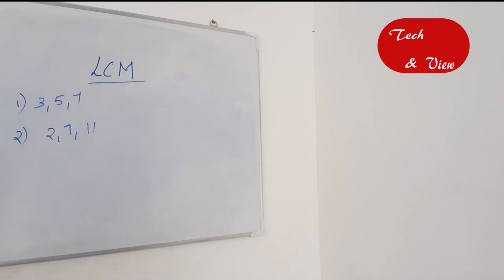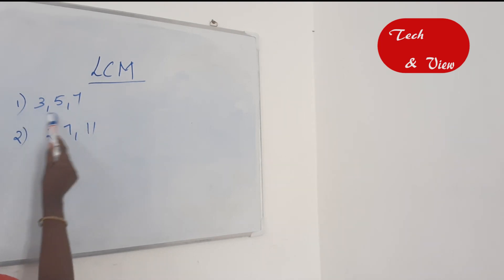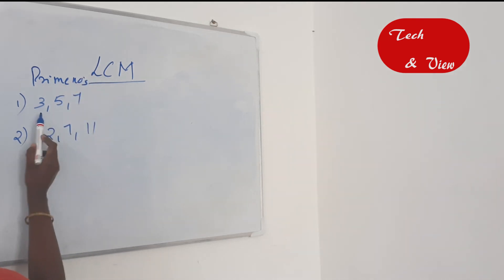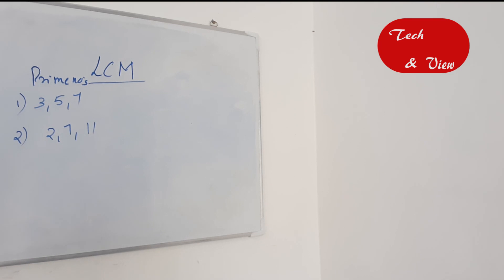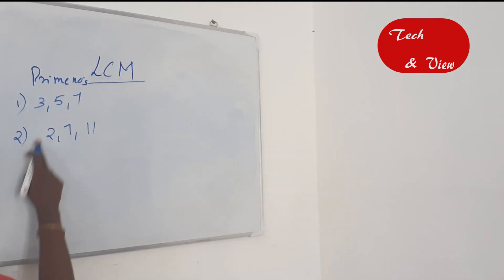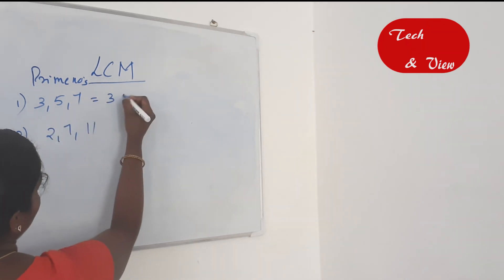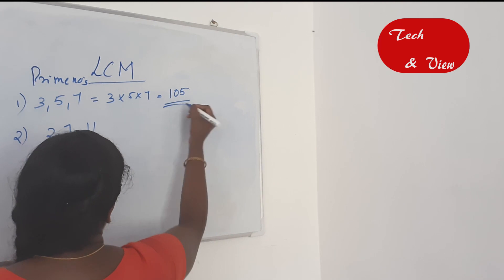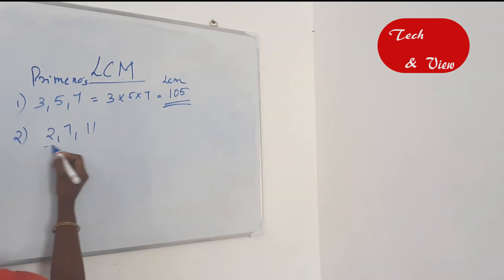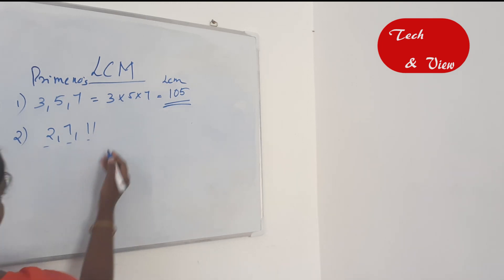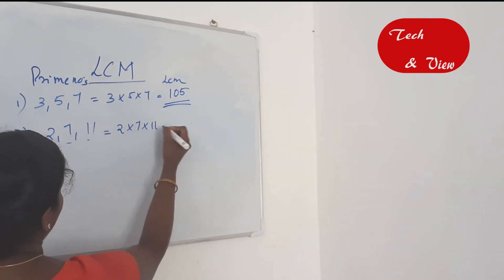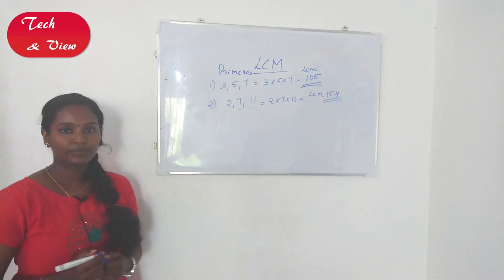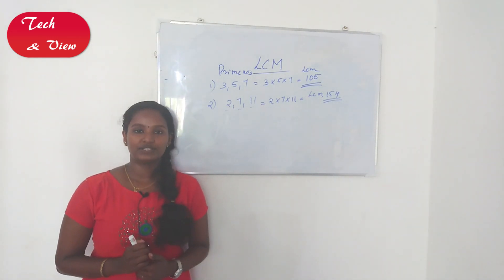Let's look at these numbers: 3, 5, 7. These are all prime numbers. When all the given numbers are prime, their LCM is simply their product: 3 times 5 times 7 equals 105. Another example: 2, 7, 11 — also prime numbers. LCM is 2 times 7 times 11, which equals 154. Thank you for watching.